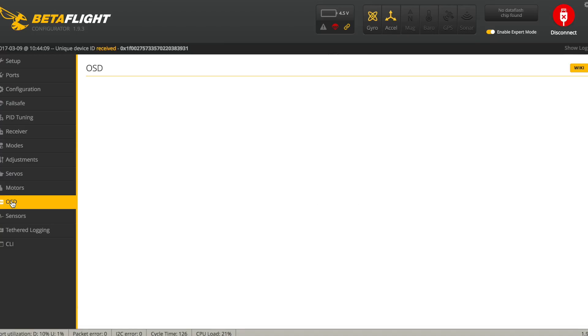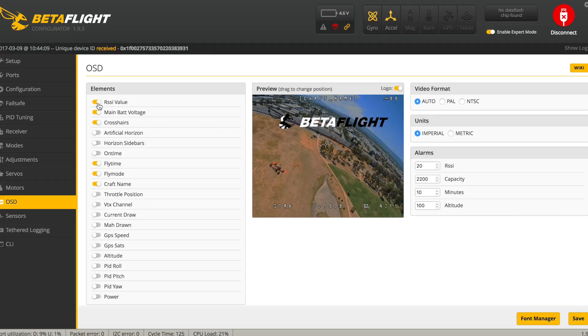and then you can go down to OSD and basically whatever elements you want to display on your OSD screen you can choose here just turn on and off the ones you want and then you can just grab and drag and drop around